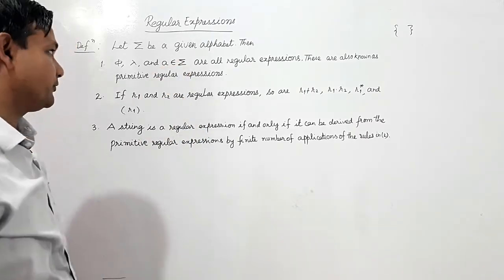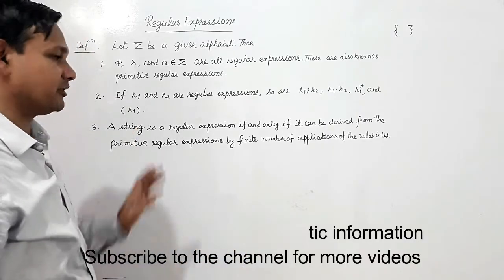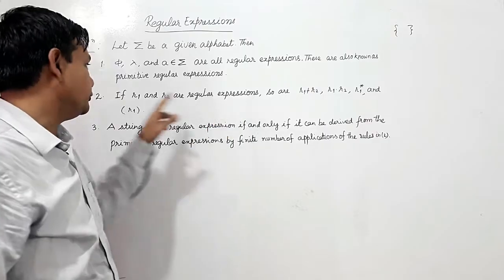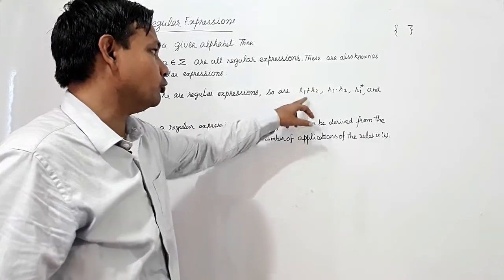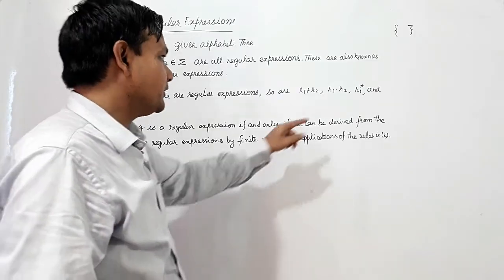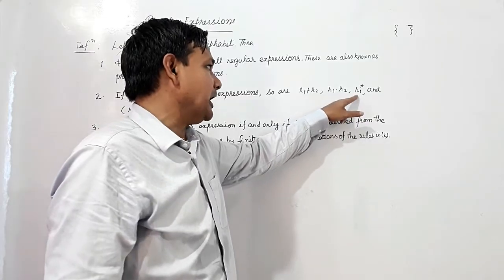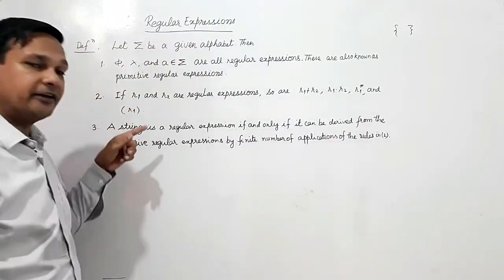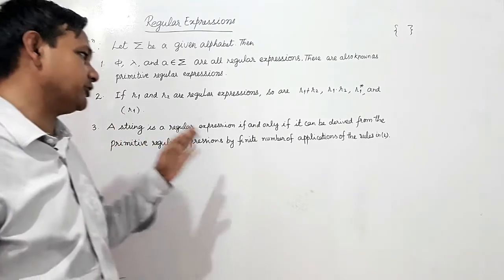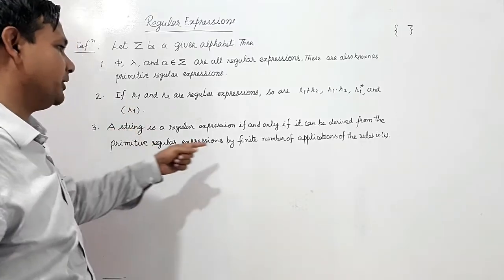If R1 and R2 are regular expressions, then: R1 plus R2 (where plus is used for union), R1 dot R2 (where dot is used for concatenation), R1 closure, and (R1) are also regular expressions. A string is a regular expression if and only if it can be derived from the primitive regular expressions by a finite number of applications of rule number two.